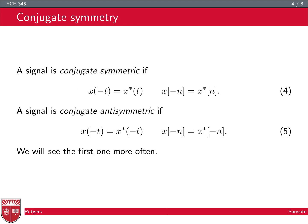A signal is conjugate symmetric if x(−t) = x*(t), and similarly for discrete time: x(−n) = x*(n). There is also conjugate antisymmetry, the odd-type version, where x(−t) = −x*(t) and x(−n) = −x*(n). We talk about conjugate symmetry more often, although conjugate antisymmetry appears when discussing Fourier transforms.